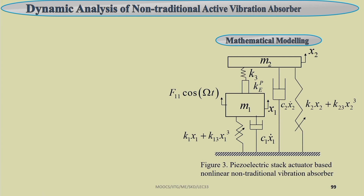We have used the system as a two-degrees-of-freedom system, a torsional system, and earlier a longitudinally vibrating system — and we have now studied a torsional vibration absorber. Similarly, you can study the system with many different kinds of application. The system can also be modeled using a non-traditional active vibration absorber; in the previous case we did not take a damper, but one can take a damper here. Also, a non-linear spring can be added to the secondary system.